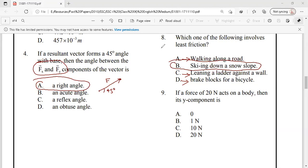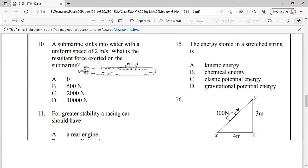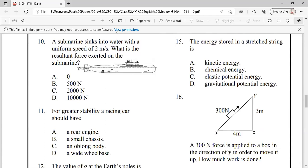Let's move to our question number 10. A submarine sinks into the water with a uniform speed of 2 meter per second. When it falls, its speed is uniform. It means its acceleration will be equal to 0 meter per second. That also means that the net force acting on it is 0. So option A is the right answer.